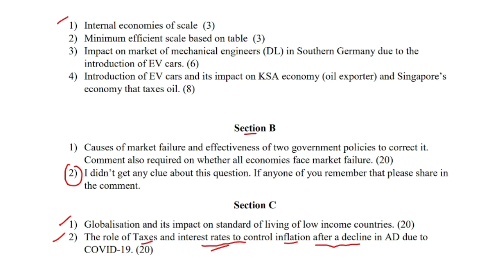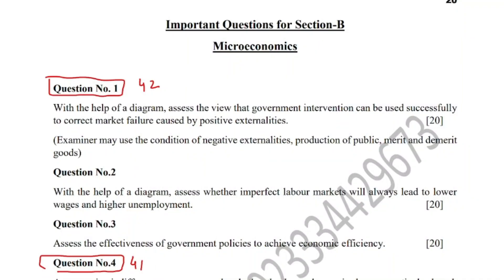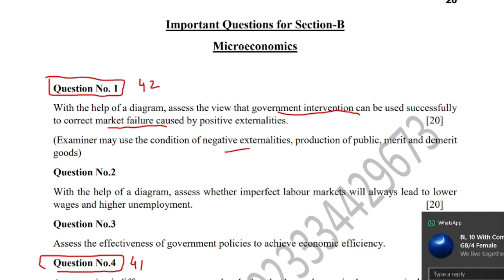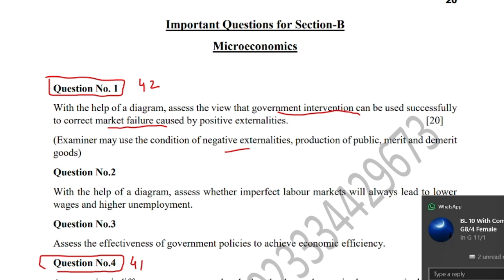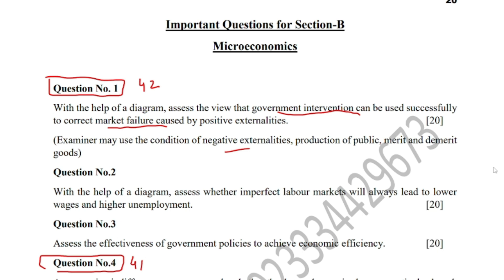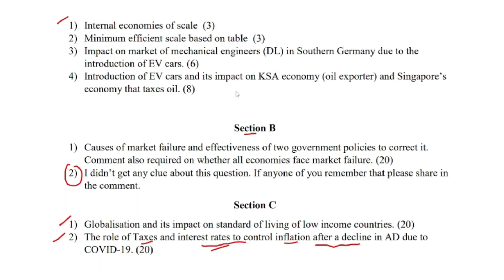Now I'm going to let you know how accurate the prediction was. In the guest paper, question number one of the microeconomics section B was relevant to the causes of market failure and government intervention or government policies to correct it. You had to talk about negative externalities, under-production of public and merit goods, over-production of demerit goods, and monopoly practices as the major causes of market failure.